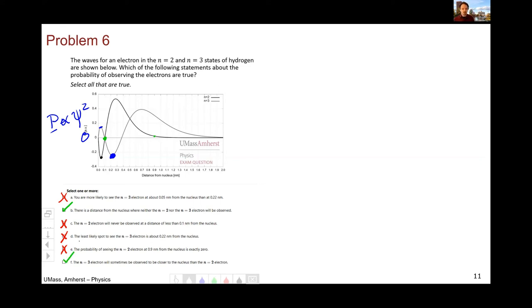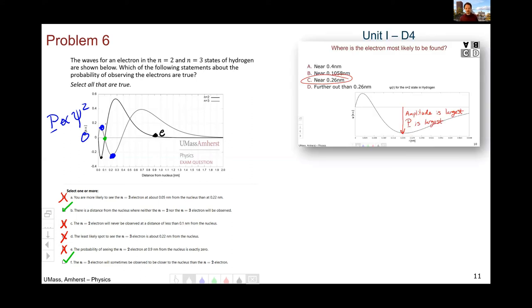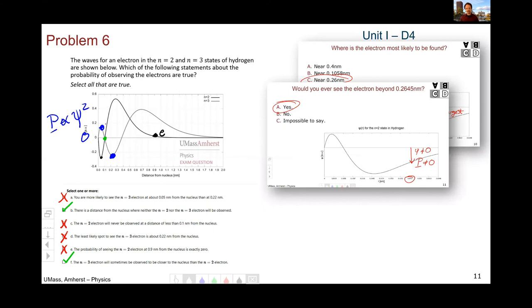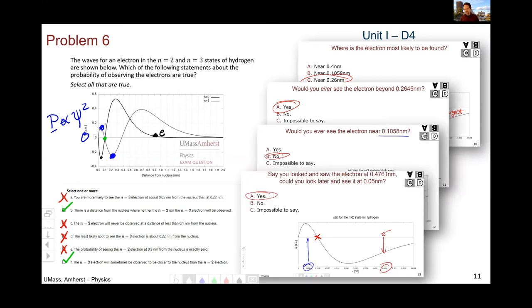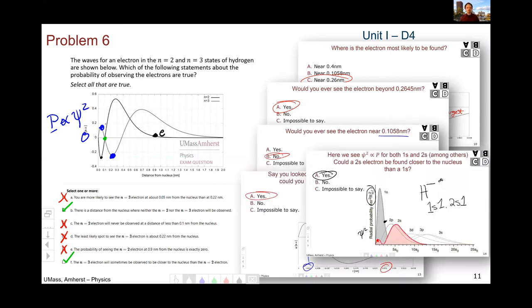And then the n equals three electron will sometimes be observed closer to the nucleus than the n equals two. That is in fact true. These are probabilities. And I might see the n equals two out here. And the n equals three say here, in which case n equals three does appear to be closer. Unit one day four had a whole series of questions related to this. Slide 10, slide 11, slide 12, slide 13, slide 14 were all related to this type of problem.